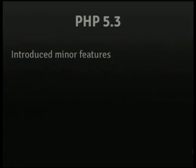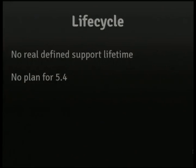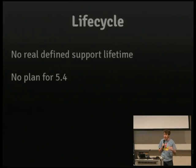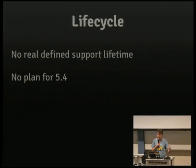To talk about where we are now we need to talk about where we were. So let's go back to the dim distant past of 2009. We released PHP 5.3 which introduced a whole bunch of features like namespaces and anonymous functions, and we probably called it the wrong thing. There was no real defined support lifetime for PHP releases at that time. Some release branches lasted a long time like 5.2, 5.3 and 4.3. Some like 5.1 and 5.0 lasted barely a year, which meant you had to be subscribed to the internals mailing list or just guess and hope for the best.